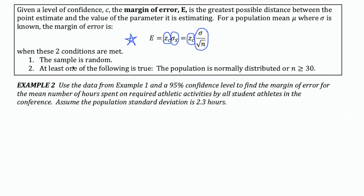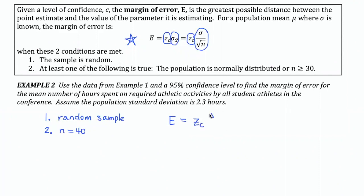First of all, we check our conditions. Was our sample of 40 student athletes random? Yes, we always employ random sampling. The second condition is that the sample size is bigger than or equal to 30, or that the population is normally distributed. Our sample size is 40, so we've met the second condition also. To find our margin of error, I'm going to take the critical value for the level of confidence I want and multiply that by the standard deviation over the square root of the sample size.